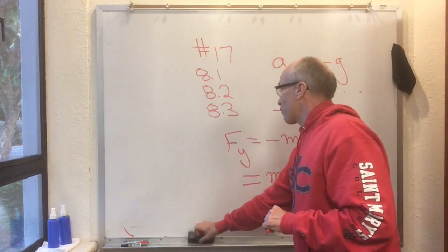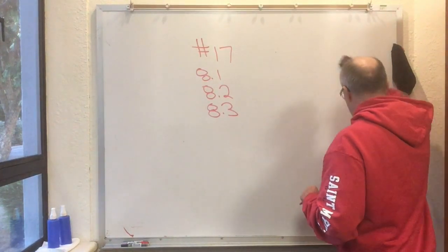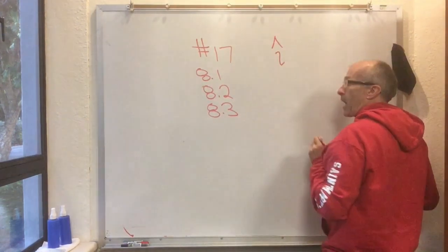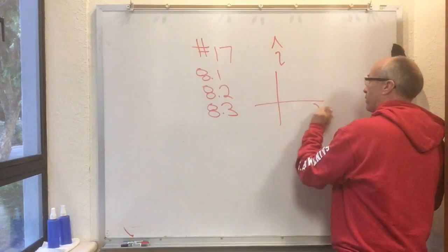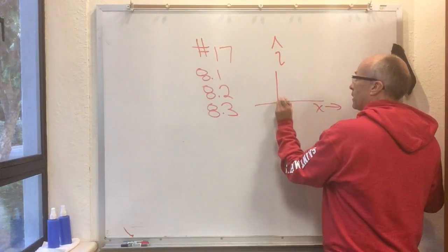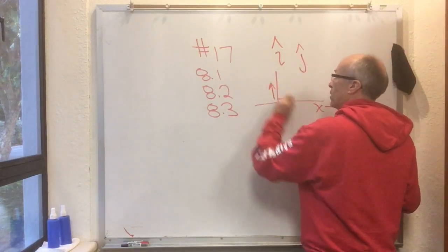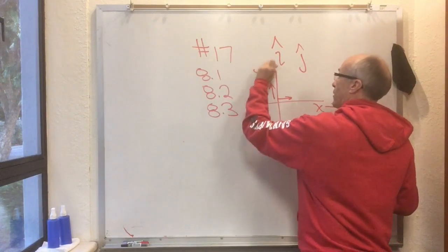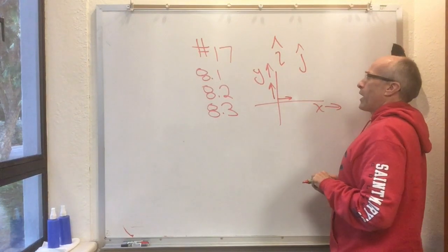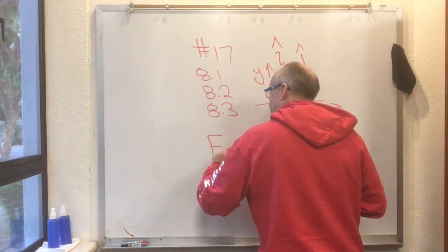Now there's a slightly fancier way of writing that, and I want to make sure you remember this. I introduced it quite a while back. We have a vector i-hat, which is a unit vector pointing in the plus x direction. We have a vector j-hat, which is a unit vector pointing in the plus y direction.